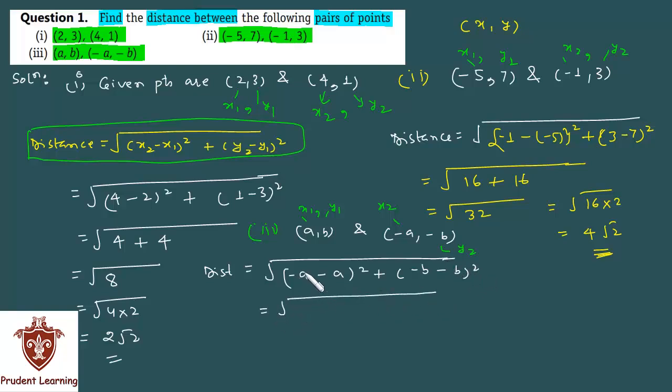Which gives us minus a minus a gives you minus 2a, and square this. Plus, minus b minus b is minus 2b, again square this.